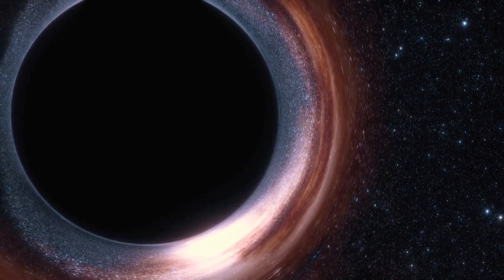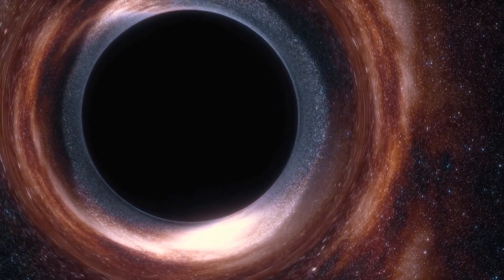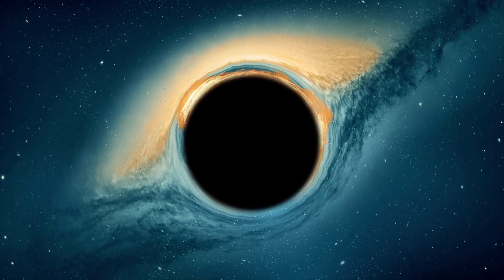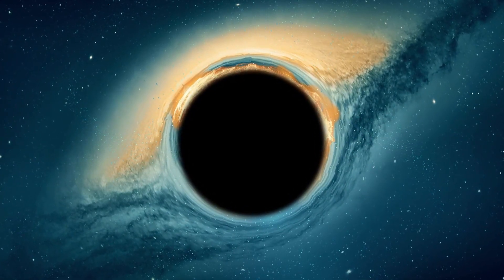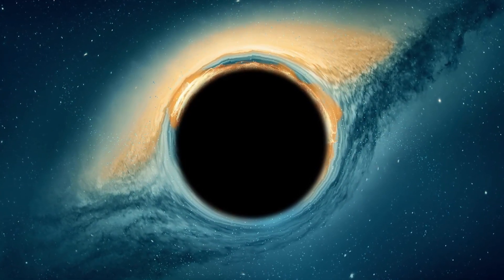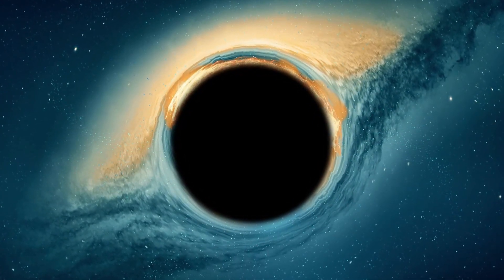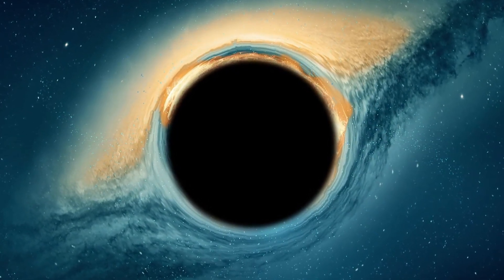As we well know, black holes possess extremely powerful gravitational force that even light cannot escape. However, in the vicinity of a black hole, one often finds a spinning disk of material, such as gas or dust, attracted by its immense gravity. This material heats up as it spirals towards the black hole, emitting X-rays and other types of radiation, creating a luminous ring known as a corona.